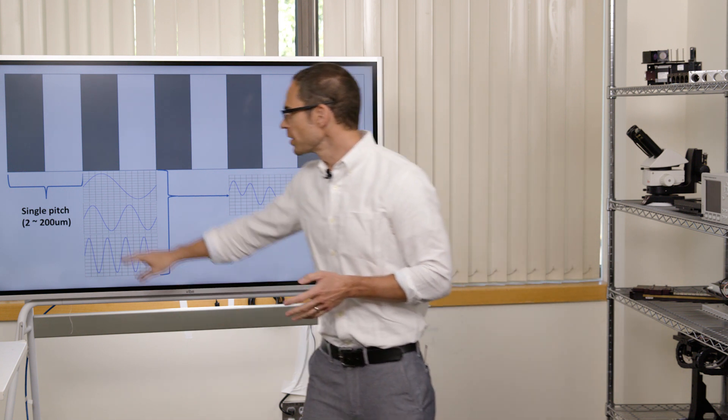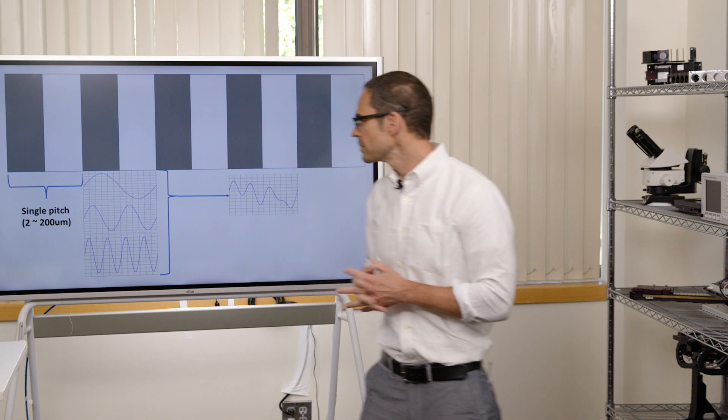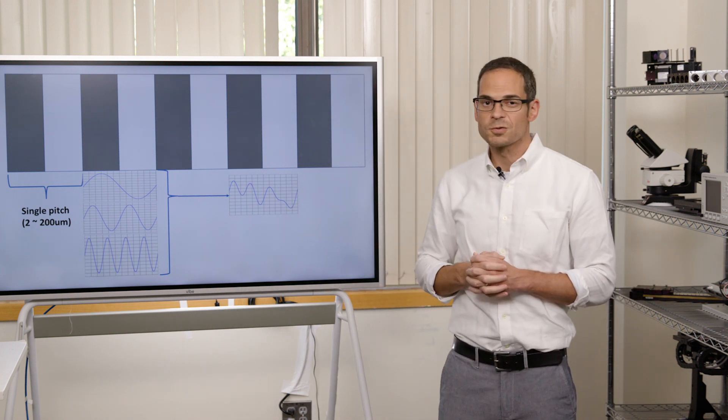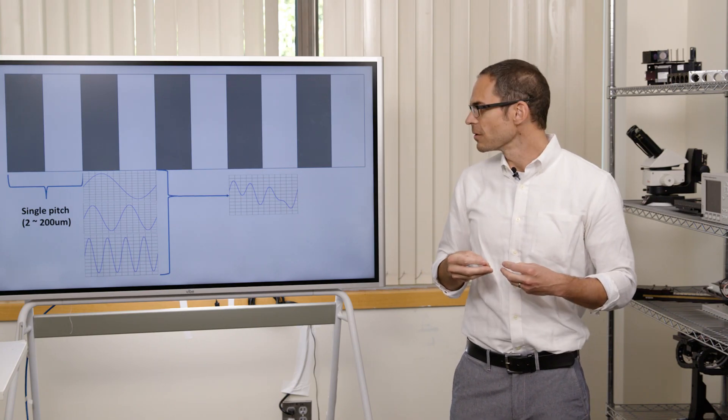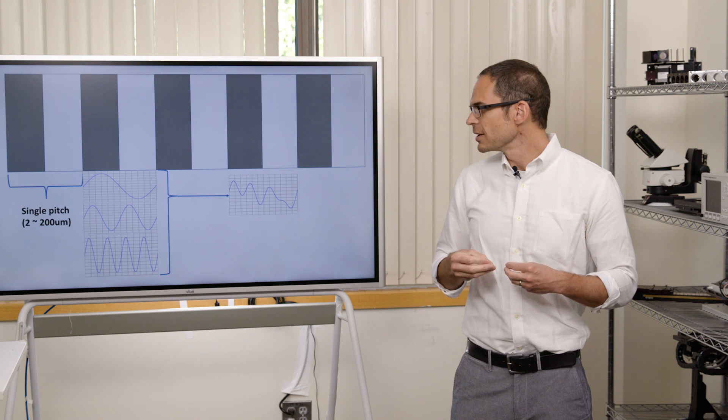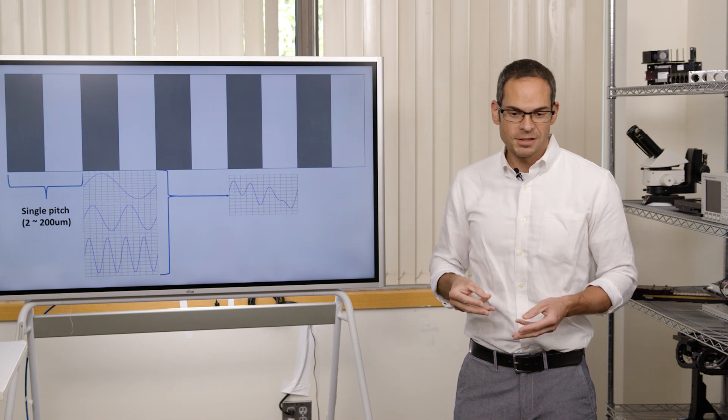So we call this a single pitch. Typically those are from two to roughly 200 microns. For us and for many encoders, that's about a 20 micron pitch. So we'll kind of take that as rule of thumb. And if you try to read this using your encoder, you will read in the values you need, your position data,